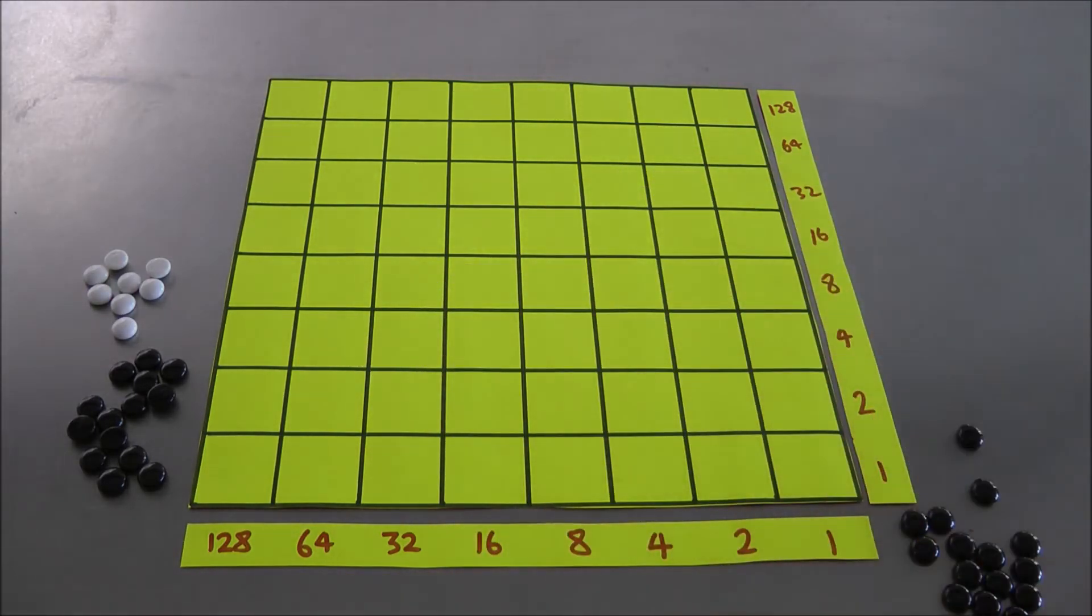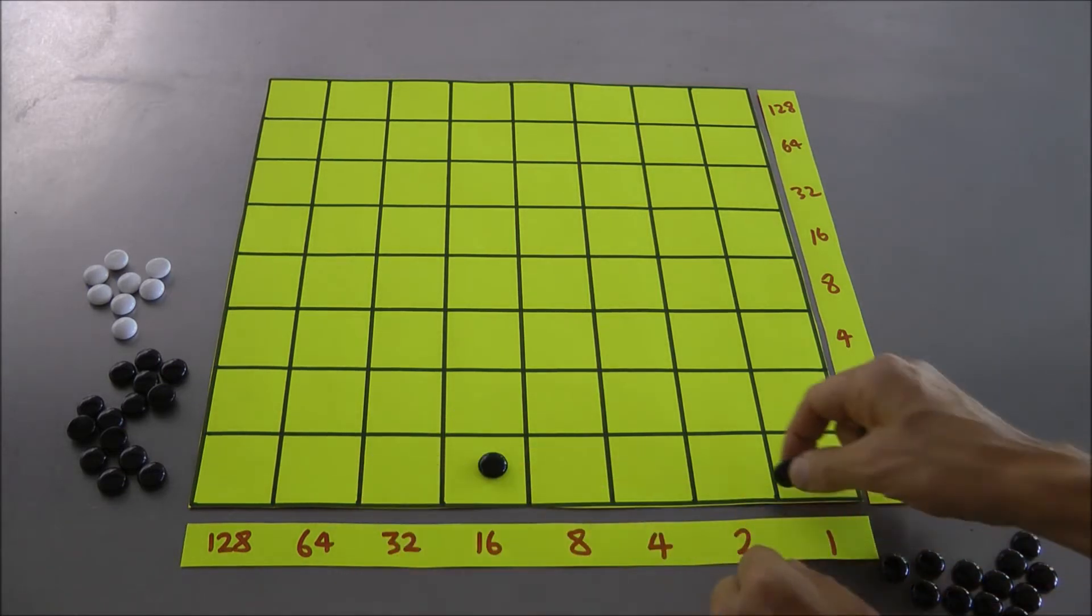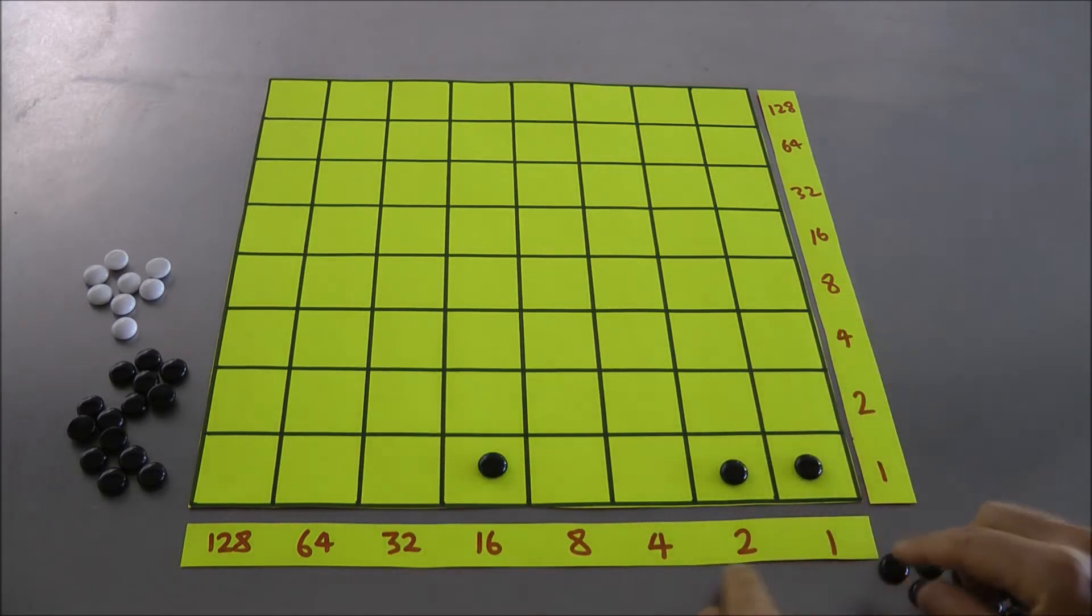Let's do 19 times 5. So what's 19? 19 is going to be a 16, a 2, and a 1. Now let's think about it. Okay. So 19, I can actually write on the board as 16, 2, and 1. But now remember, I actually think of this as 16 times 1, and 2 by 1, and 1 by 1. So it really is 19 times 1.